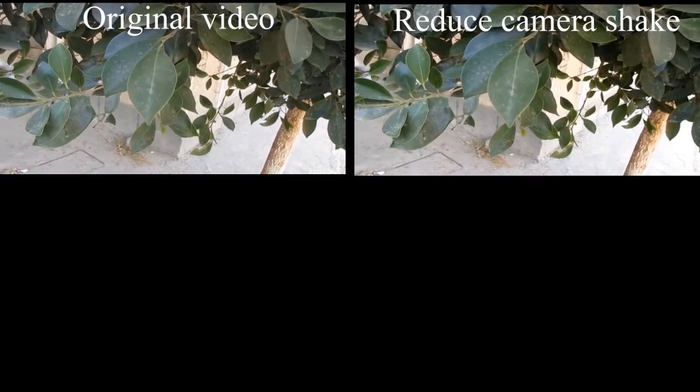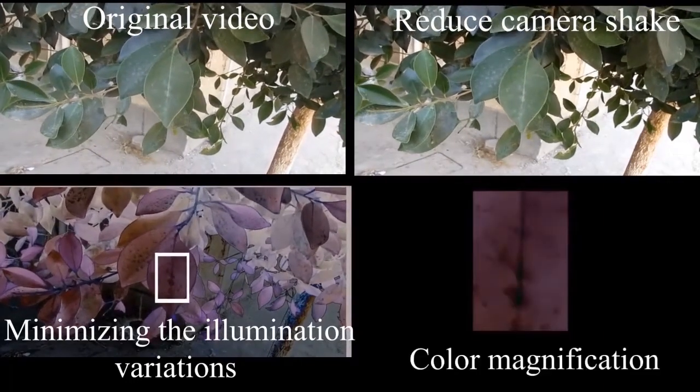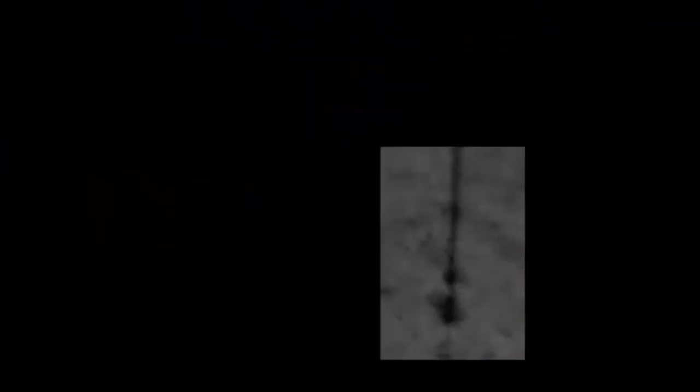First, we stabilize the recorded video to reduce camera shake. Then, we utilize illumination variations. Lastly, we apply the color magnification process to the region of interest of the plant to magnify the changes to its color.